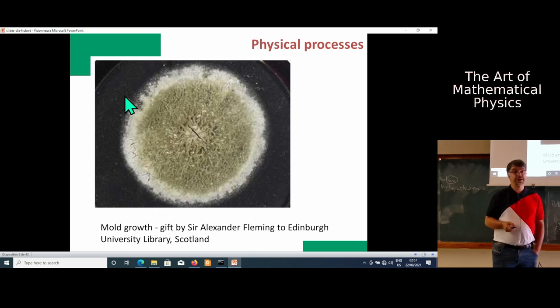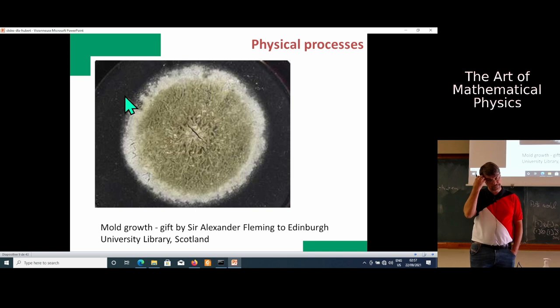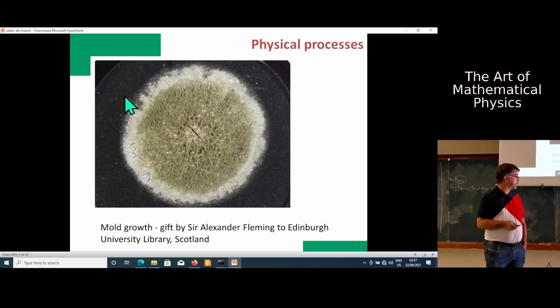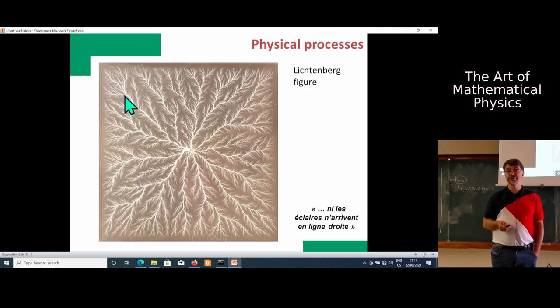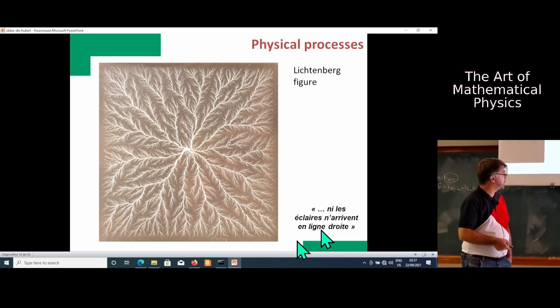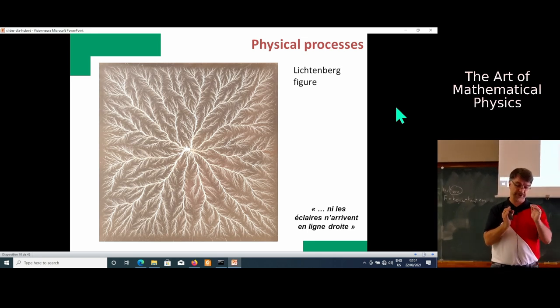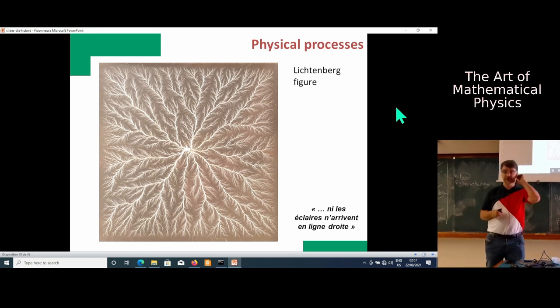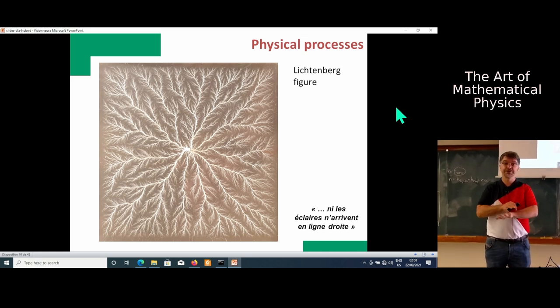This is what mathematicians do when no one is watching - they experiment. This is an experiment you can do at home. You should have two liquids with different viscosity and you pump one. You can easily write Darcy's equation and all that. You see immediately there is something which is ill-posed and you create this sort of fractal shape, very reminiscent of the previous ones.